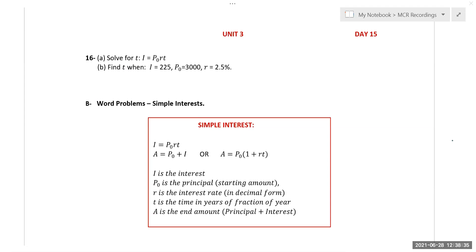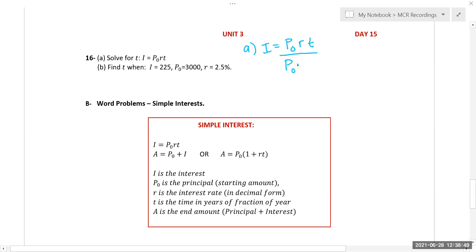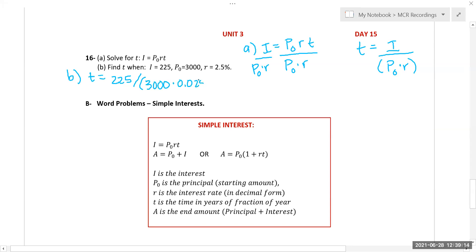This would be a great one to go ahead and pause and try yourself. To solve for T — these are being multiplied, so we're going to divide by them. T equals I divided by (P₀ times R). For part B, go ahead and solve: T equals I divided by (3000 times 0.025) — make sure to convert that rate. As long as you have the parentheses, you get T equals 3.